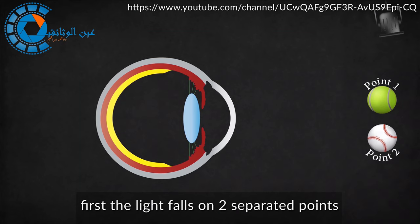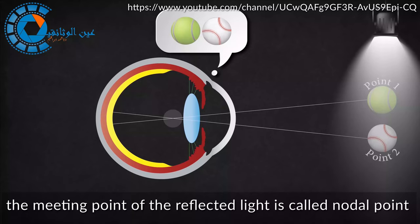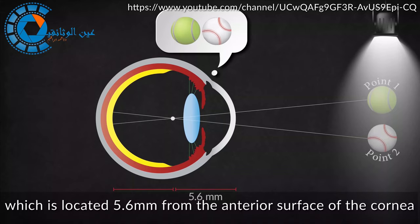Now we will explain what is the meaning of angle of resolution, and how it is formed. First the light falls on two separated points, then reflected from the two points to the retina. The meeting point of the reflected light is called nodal point.